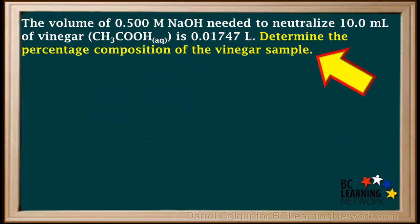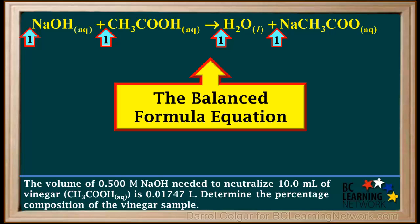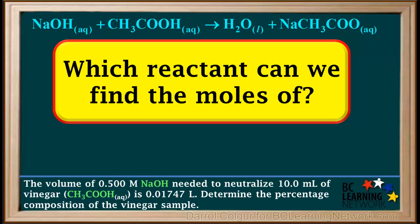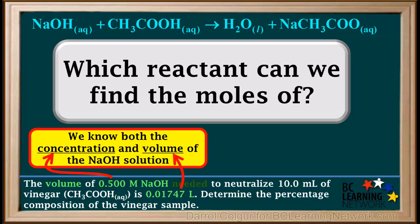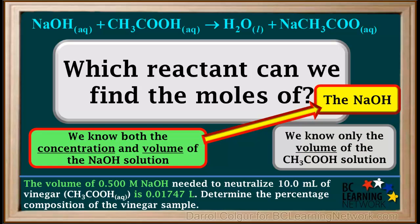The volume of 0.5 molar NaOH needed to neutralize 10 milliliters of vinegar is 0.01747 liters. Given this information, we are asked to determine the percentage composition of the vinegar solution. Before we start the calculations, we need the balanced formula equation for the neutralization of CH3COOH by NaOH. This equation is balanced when all coefficients are 1. The first question we ask is: which reactant do we have enough information to find the moles of — NaOH or CH3COOH? We know both the concentration and the volume of NaOH, but only the volume of CH3COOH, so the reactant we can find the moles of is the NaOH.